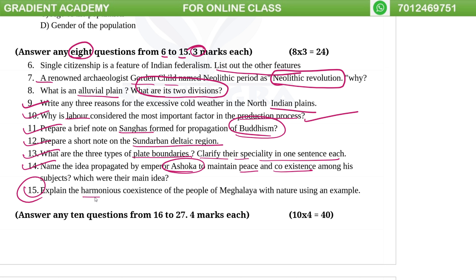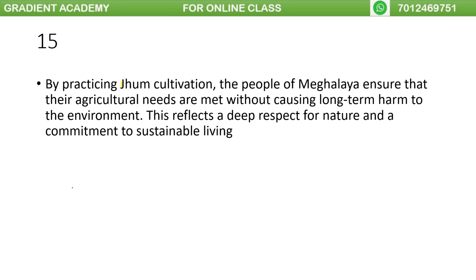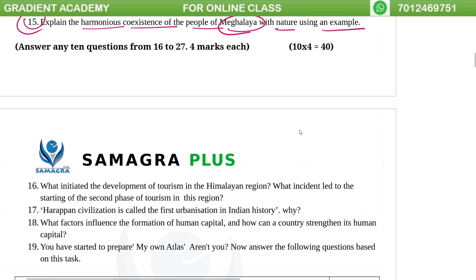Explain the harmonious co-existence of the people of Meghalaya with nature using an example. Meghalaya practices the jhum cultivation practice. The environment reflects sustainable living, and this is an example of the people of Meghalaya living in harmony with nature.